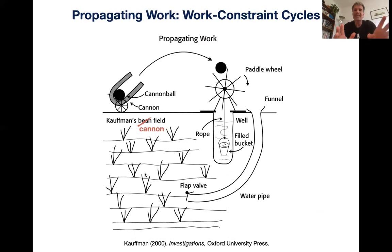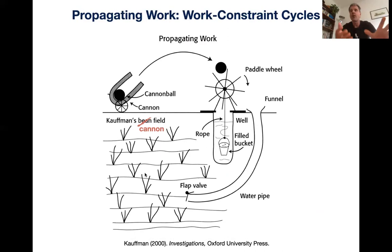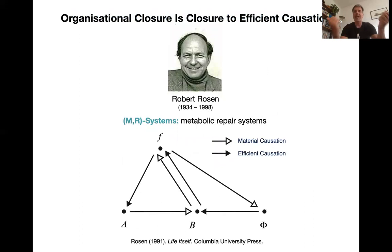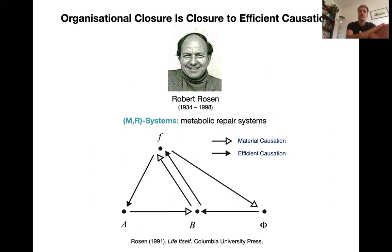This is the idea of a work-constraint cycle: you use work to build up more constraints, which allow you to do more work — a way of building up the complicated organization you find in a living system. But there is still a problem. Everything in Rosen's abstract diagram is caused by something else. Kauffman's example is a recursive system: you iterate through cycles and each builds on the previous one, creating more constraints through recursion. However, that doesn't fully capture the situation where every efficient cause is generated from within the system — that is slightly different.